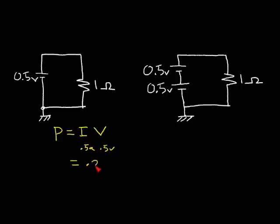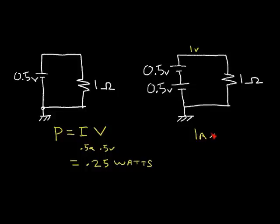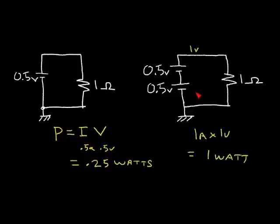Now when we have two batteries in series, the voltage becomes 1 volt across the 1 ohm resistor, giving us 1 amp. So the power for the two series batteries is 1 amp times 1 volt, which equals 1 watt. We see that adding solar cells in series — two in series — can produce four times the power: instead of a quarter watt we get a watt. That's why solar cells are often added in series to produce a lot of power.